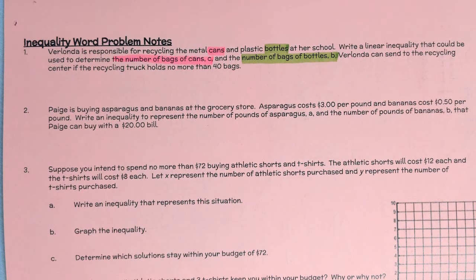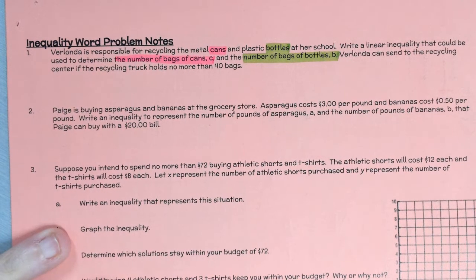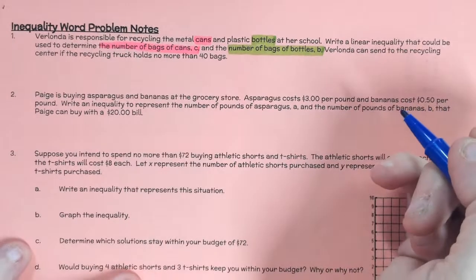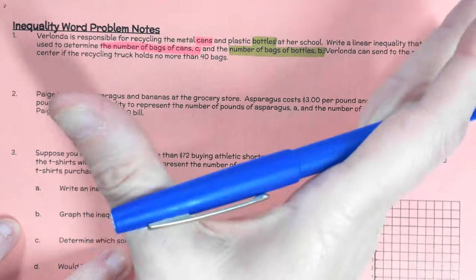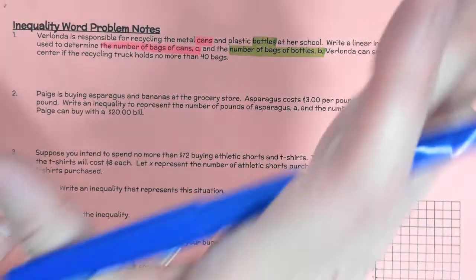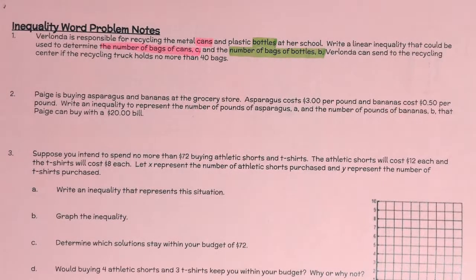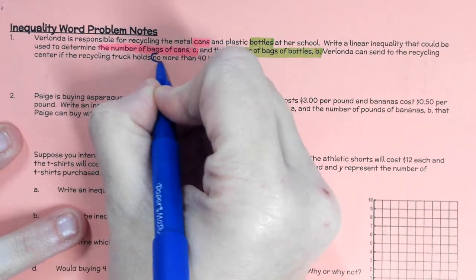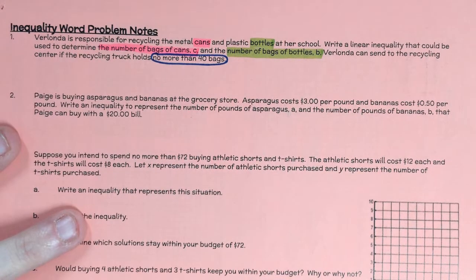The third thing I use is my pencil or pen. If instead of highlighting you want to circle or color with colored pencils, that's fine too. I find the word that tells me whether it's going to be equal, an inequality, or what sign to use. In this case, it says 'no more than 40 bags,' and I circle that.